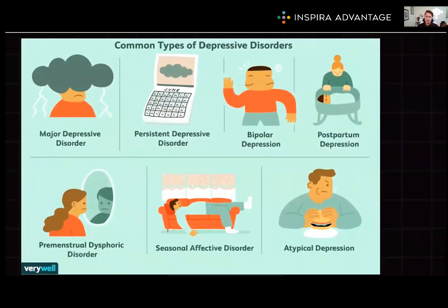Next, we want to talk about the different depressive disorders. Depressive disorders include major depressive disorder, persistent depressive disorder or dysthymia, and seasonal affective disorder, or SAD. These conditions involve persistent feelings of sadness, hopelessness, and a loss of interest in activities, with varying severity and duration.